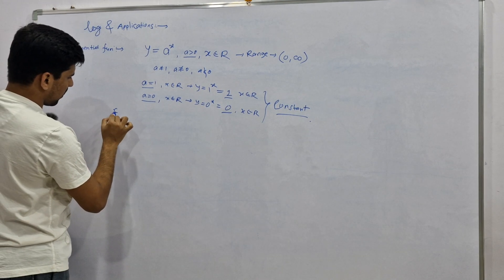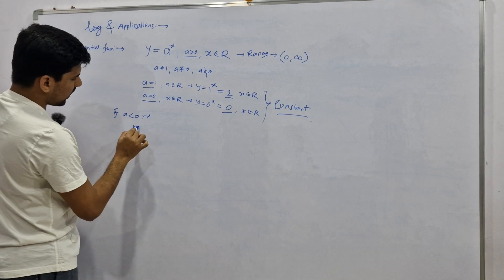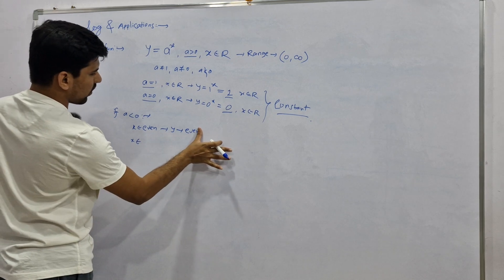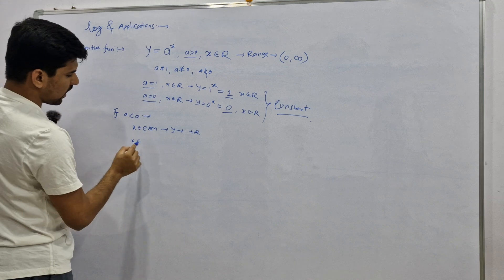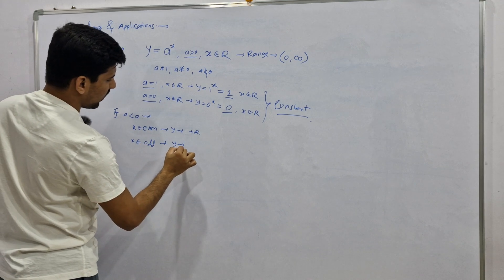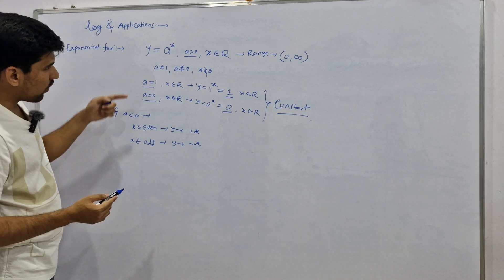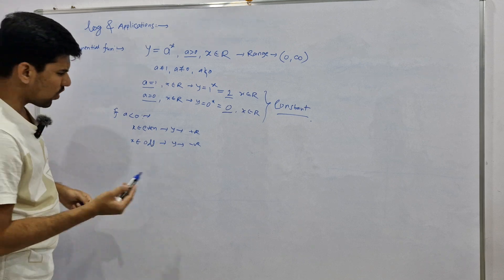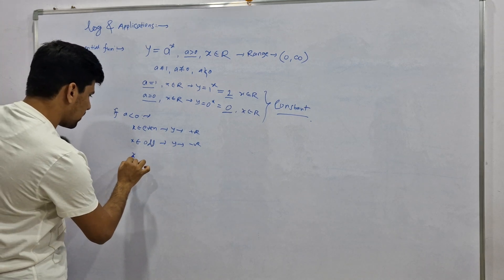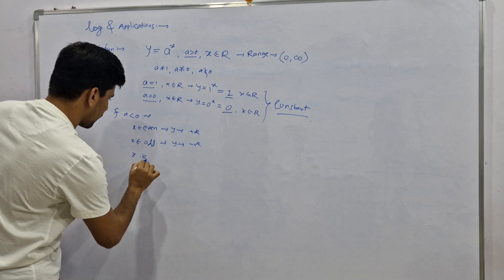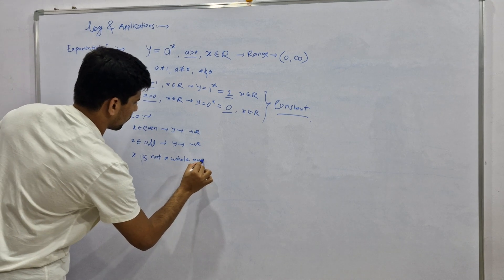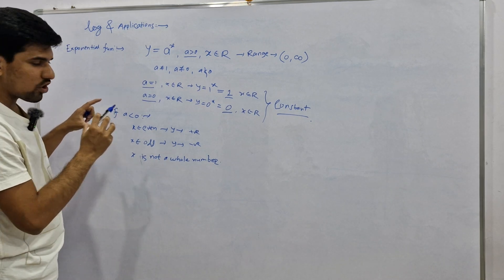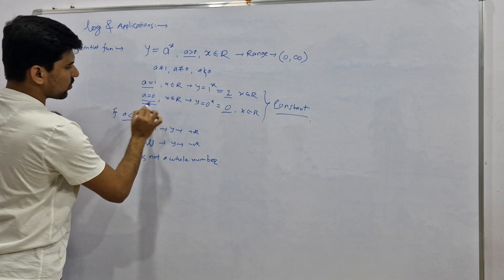Now, if a is less than zero and x is even, our function will give a positive output. But if x is odd and a is less than zero, our function will give a negative output. Furthermore, what would be the value of our function if x is not a whole number? That's why, to define our exponential function properly, we cannot take a less than zero, a equal to one, or a equal to zero as the base.